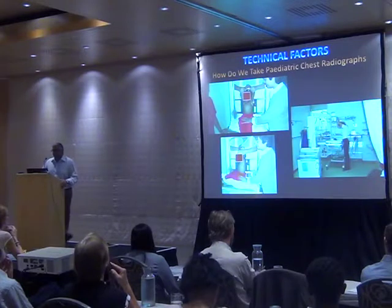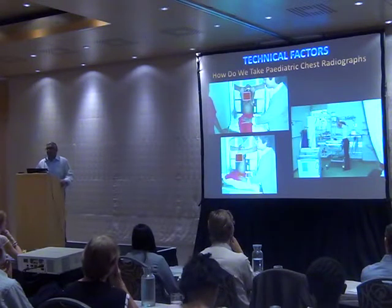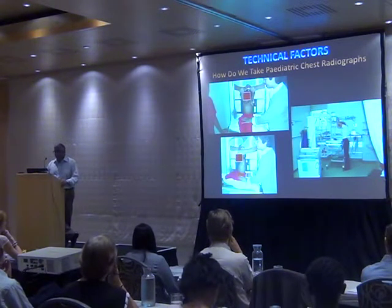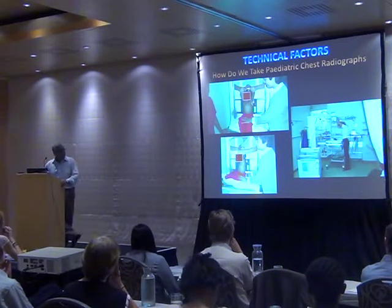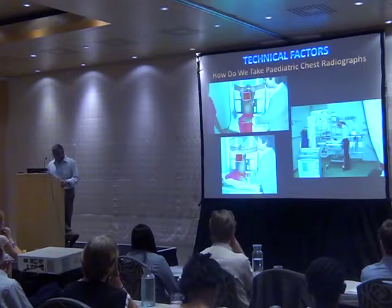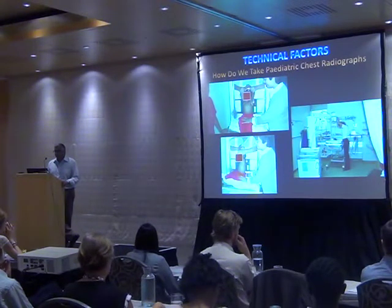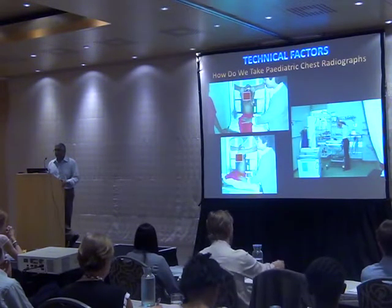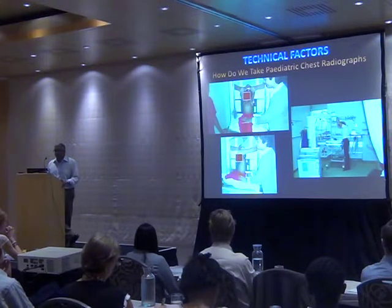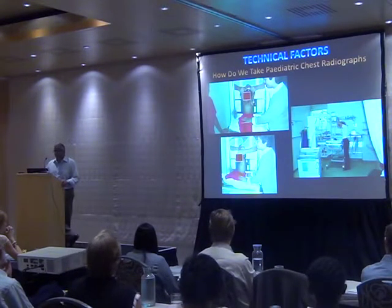Our technical challenges in pediatric radiology commence with acquisition — how do we actually take a chest radiograph? Unlike in adults where we use postero-anterior projections, in children we generally acquire them in an antero-posterior manner. Some of these technical challenges are depicted in the photographs — we're usually dealing with a fearful, highly mobile child, so a moving target requires restraint and assistance from various sources including porters, nurses, and people not necessarily radiographically trained.